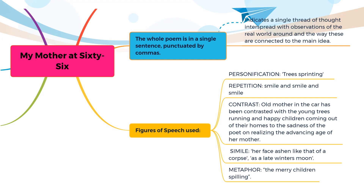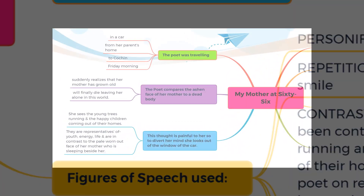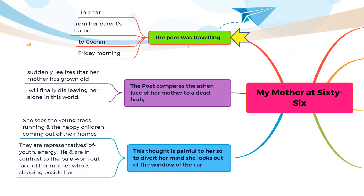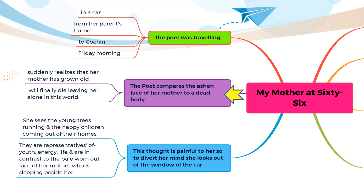The tone of this poem is predominantly pensive and sorrowful. The poet was driving from her parents' house to Cochin Airport when, inside the car, she sees her mother sitting beside her doze off. The striking image of a woman weakened by her age, dozing off with her mouth open, leaves a very strong impression on the poet, who feels her mother's face resembles the pale face of a dead body. She suddenly realizes that her mother has grown old and will die soon. She attempts to put the thought away by looking outside the window, where she sees young trees sprinting and merry children spilling out of their homes — a sharp contrast to her weak and dozing mother.